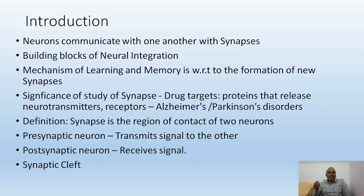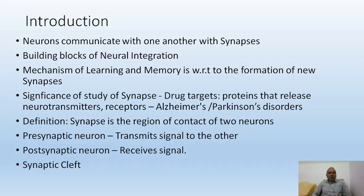There are proteins involved in secreting neurotransmitters and certain proteins act as receptors at the site of synapse. These drugs directly influence the proteins producing neurotransmitters or the receptors. That is why, to understand the effect of drugs, we need to understand the mechanism of synaptic transmission and synaptic structure. Synapse is the region between two neurons — the junction, a structural gap, and the functional bridge between the two neurons.